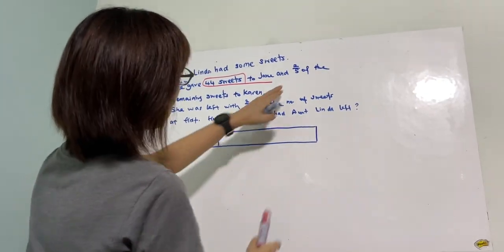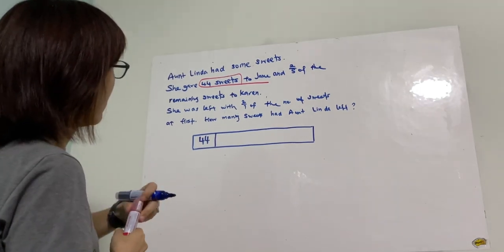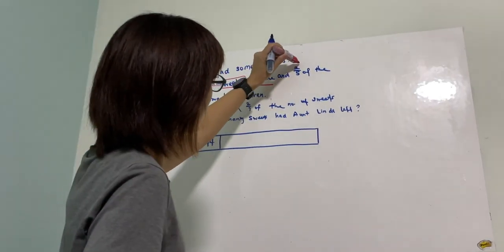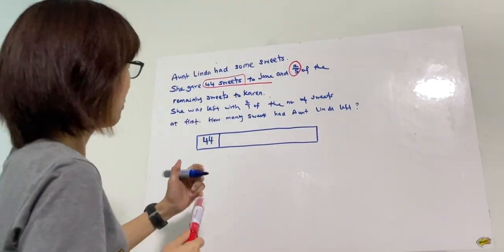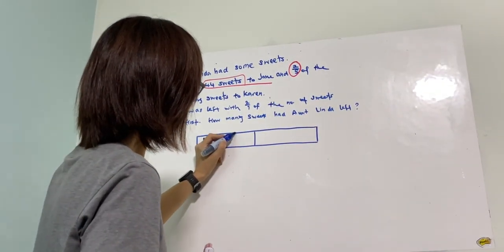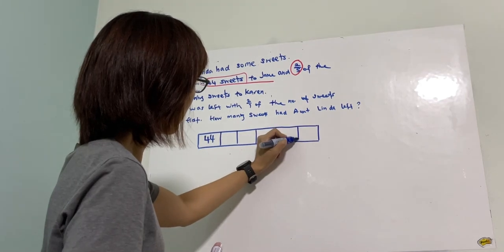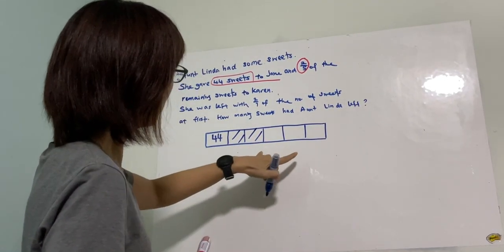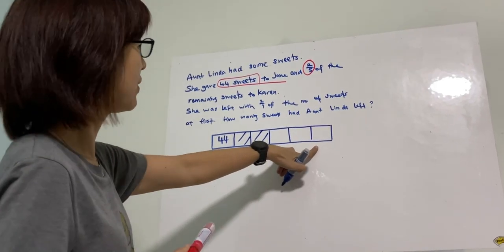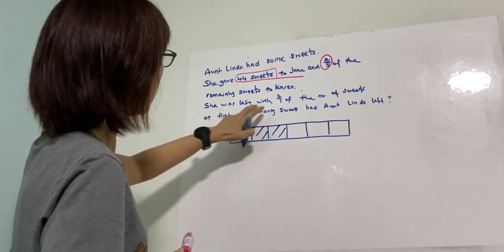Out of the remaining portion of sweets, two-fifths of it is given to Karen. Out of the remainder, I need to divide this into five equal parts. This one goes to Karen, which leaves us with three units.